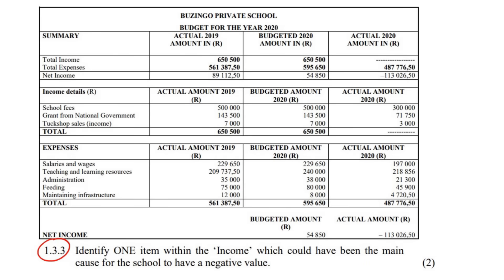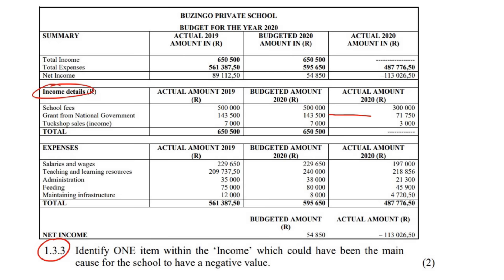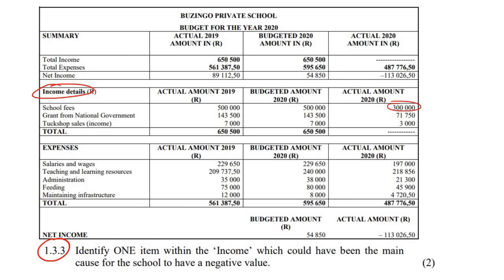Identify one item within the income which could have been the main cause for the school to have a negative value. If you go to the income section and look at the actual versus the budgeted, you can see there was less income from the tuck shop, and less income from the national government. But the big one is school fees: they budgeted 500,000 Rand but only managed to get 300,000 Rand. You could say it's the tuck shop, but that's only about 4,000 Rand lost. The main cause is clearly school fees.